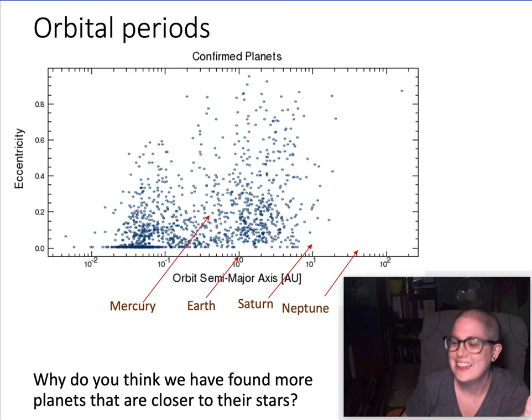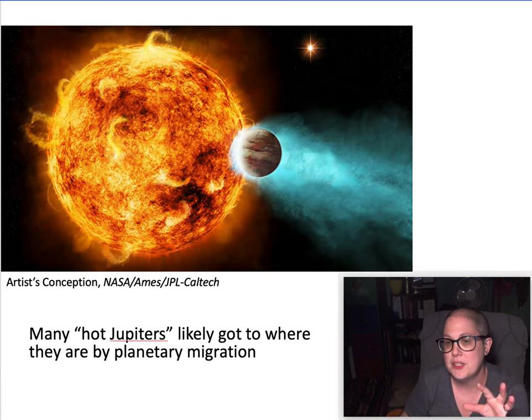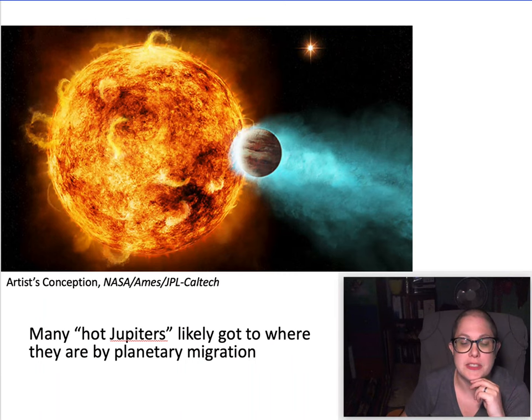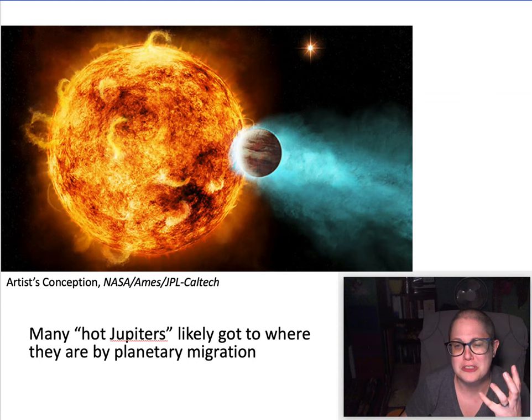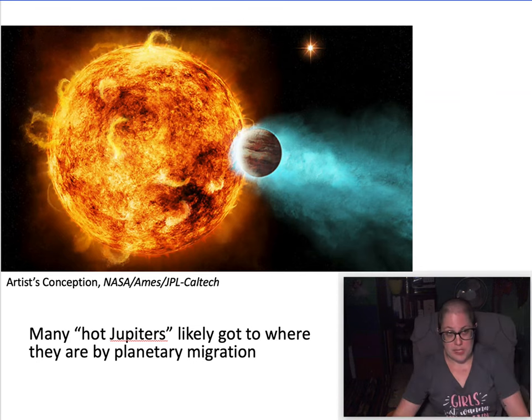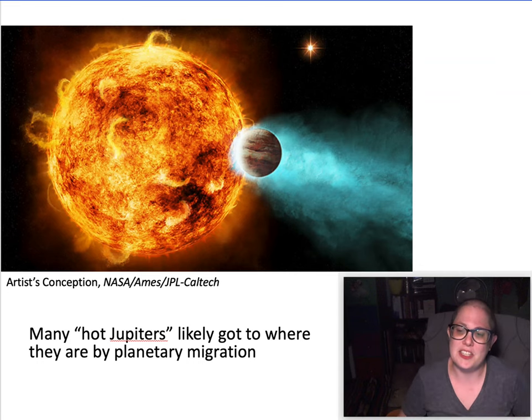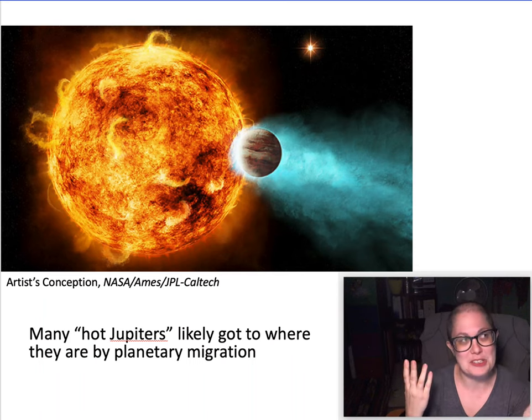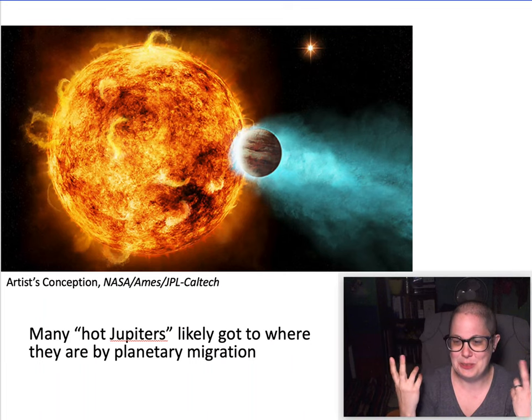This is an artist conception of a hot Jupiter. Many of the first exoplanets were these gas giants super close to their stars. They probably didn't form there. We're not talking about planetary formation in this course, but it's expected that large gas giants can only form further out away from their stars where it's a lot colder.